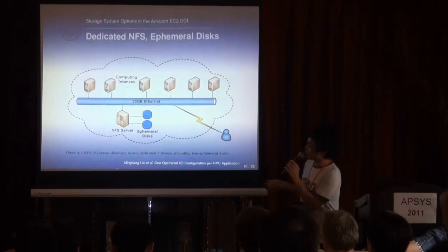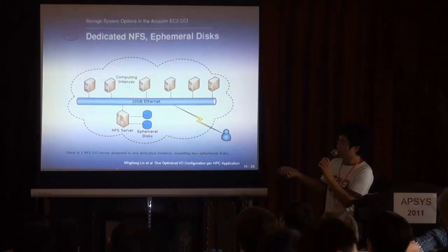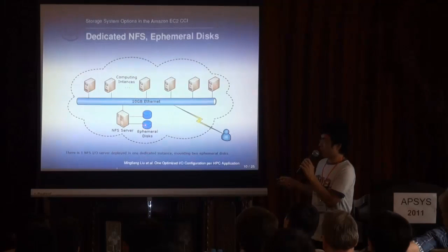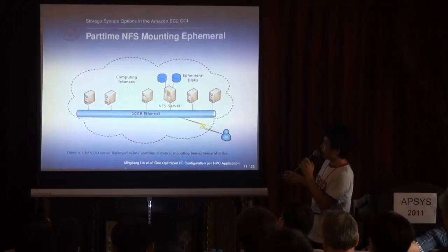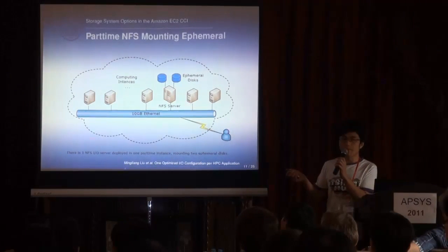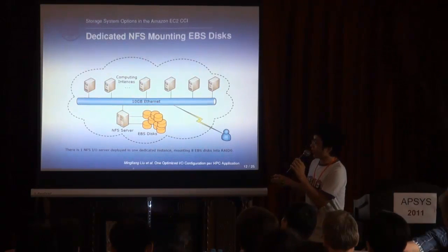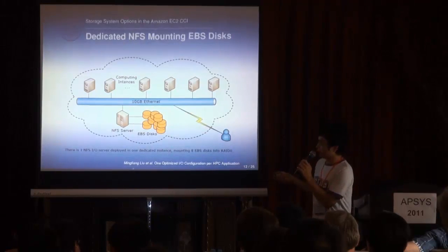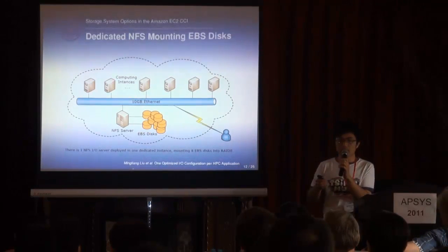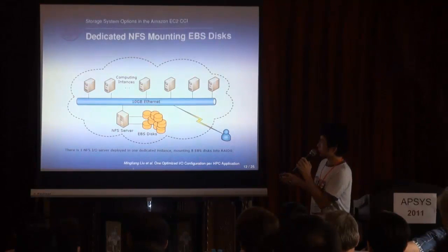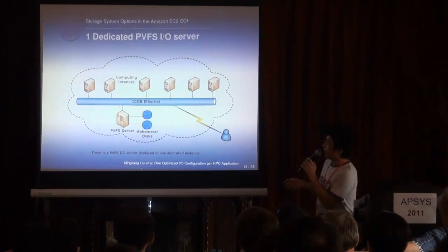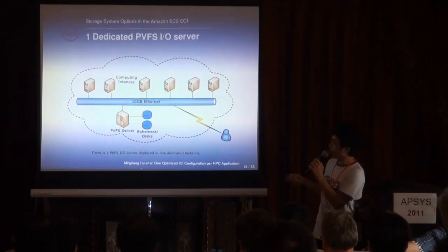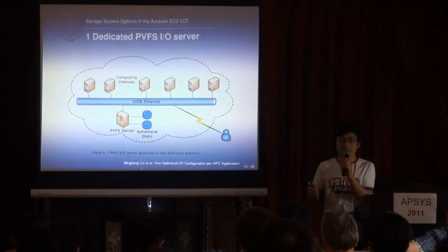Here is an example. You can see from this picture that there is one dedicated NFS server that does not take part in the computing processes, with two ephemeral disks mounted. In another picture, we deploy the NFS server to the part-time computing nodes, or we can mount EBS disks. Since EBS disks can be mounted as many as you want technically, we can mount many EBS disks to increase capacity and bandwidth. This picture shows one PVFS deployed on a dedicated IO server mounting two ephemeral disks, which is the same system scaled by adding more nodes.